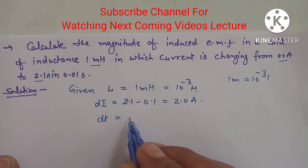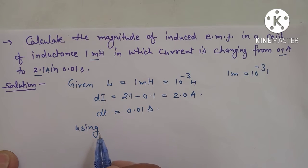And time dt is equal to 0.01 second. Now, we are going to use the relation.